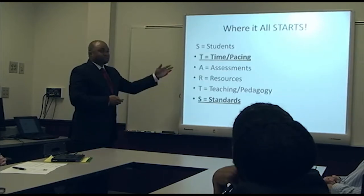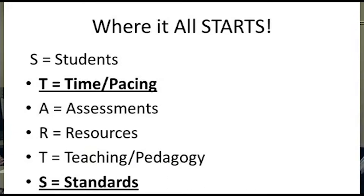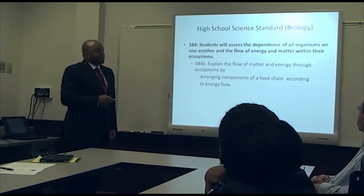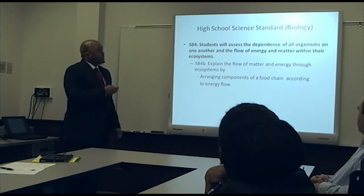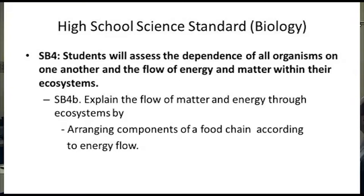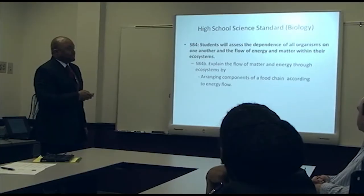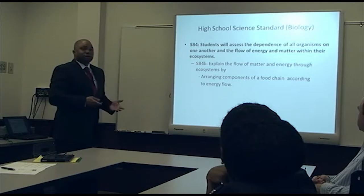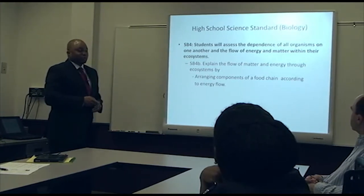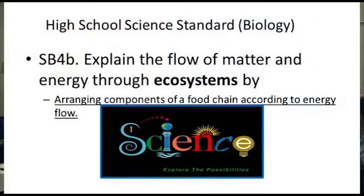Now that we've considered our students, we move to the time and pacing of this lesson, as well as the standards. The standard for this lesson is SB4: students will assess the dependence of organisms on one another and the flow of energy and matter within their ecosystems. SB4B states: explain the flow of matter and energy through ecosystems by arranging components of a food chain according to energy flow. For this lesson, we focus on how students arrange organisms in a food chain based on energy flow.